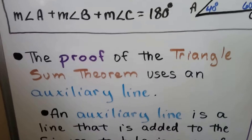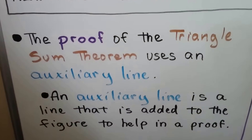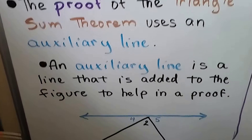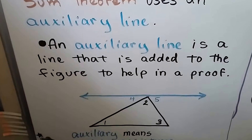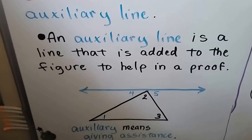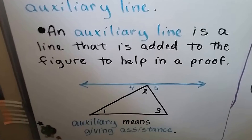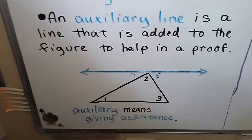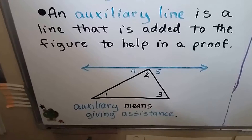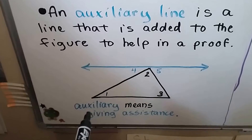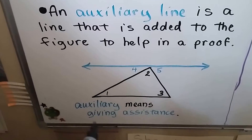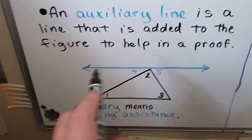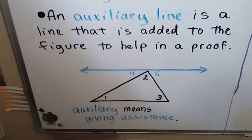The proof of the Triangle Sum Theorem uses an auxiliary line. An auxiliary line is a line that is added to the figure to help in a proof. Auxiliary means giving assistance, so we're going to draw a line that's going to give us some assistance.